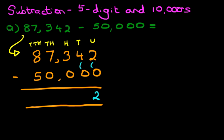The tens, four minus zero is four. Hundreds, three minus zero is three.